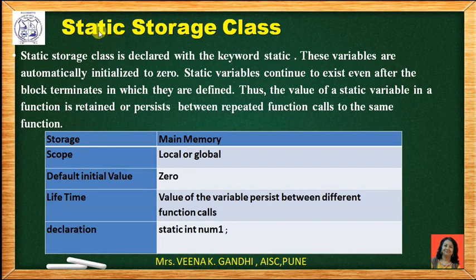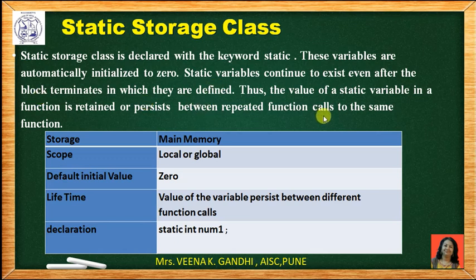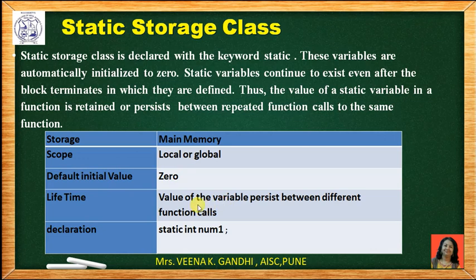Second storage class is static. Static variables are declared with the keyword static and are initialized to 0 by default. Static variables continue to exist even after the block in which they are defined terminates. The value of a static variable in a function is retained or persisted between repeated calls to the same function. Storage is main memory; scope can be local or global. The default initial value is 0, and the lifetime persists between different function calls. Declaration syntax: static int number.